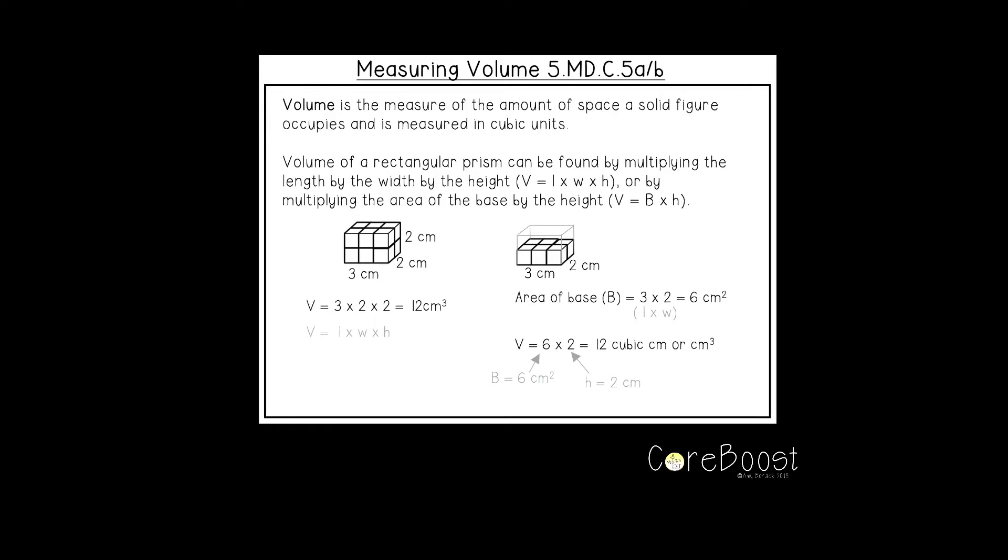Volume is the measure of the amount of space a solid figure occupies and is measured in cubic units. The volume of a rectangular prism can be found by multiplying the length by the width by the height or by multiplying the area of the base by the height.